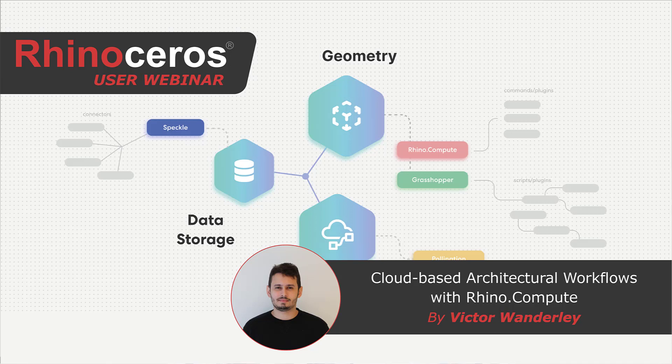Victor is going to introduce some examples of automation using Rhino Compute, Grasshopper as a geometry engine, together with other cloud-based technologies like Speckle and Pollination. I'll let Victor start presenting, and as always, I'll be here collecting questions for him at the end of the webinar. Victor, thank you very much — feel free to start whenever you want.